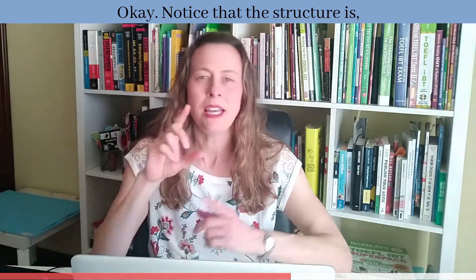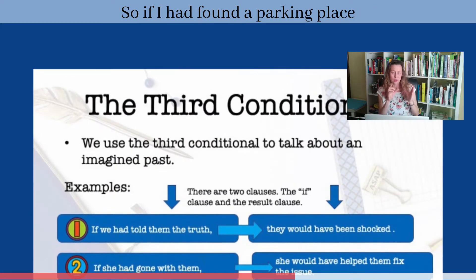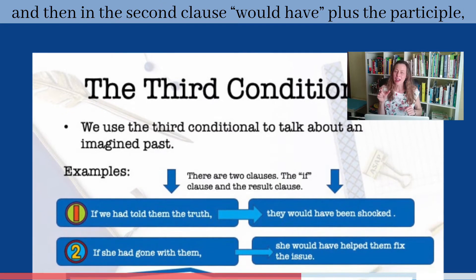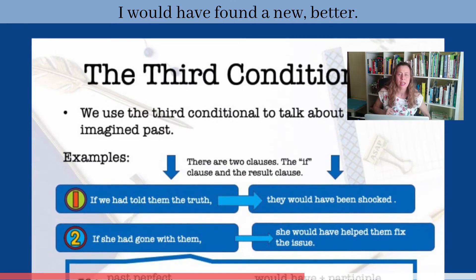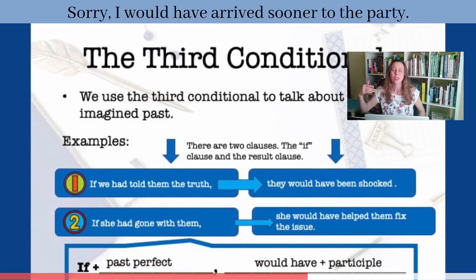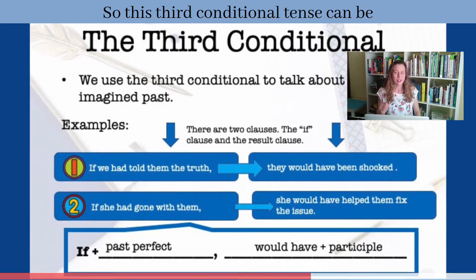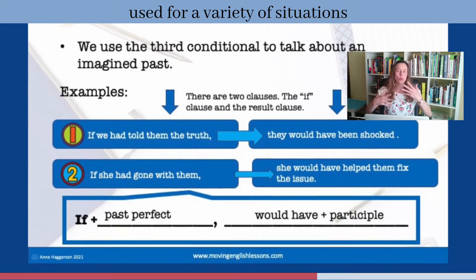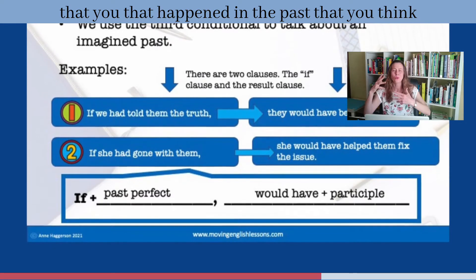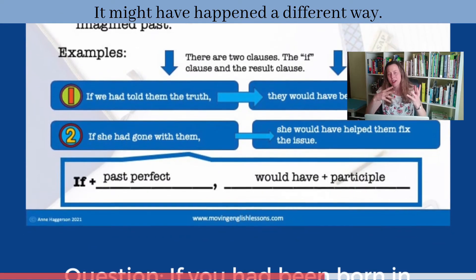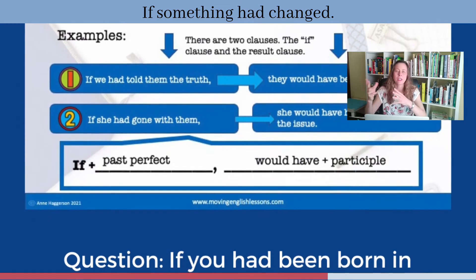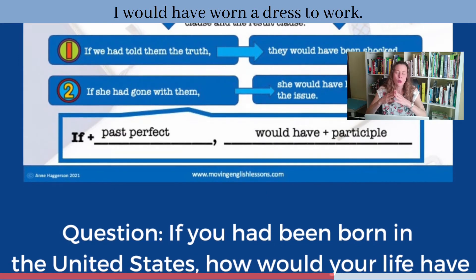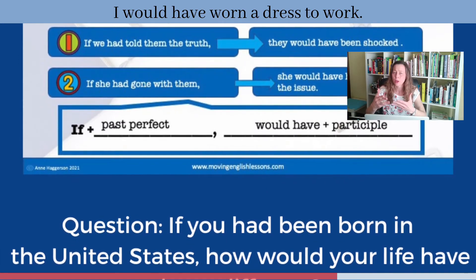Notice that the structure is 'if' plus the past perfect in the first clause — if I had found a parking place — and then in the second clause 'would have' plus the participle — I would have arrived sooner to the party. This third conditional can be used for situations that happened in the past where you think it could have gone differently, or might have happened a different way if something had changed. For example: if it hadn't rained today, I would have worn a dress to work.